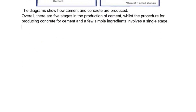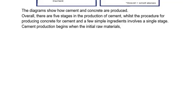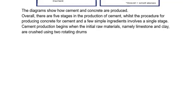Let's get started. 'Cement production begins when the initial raw materials, namely limestone and clay, are crushed using two rotating drums to make a fine powder.'